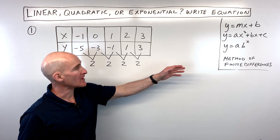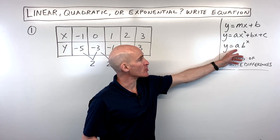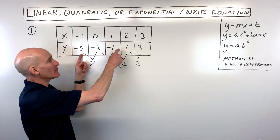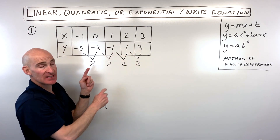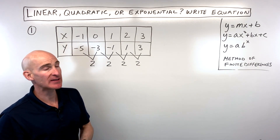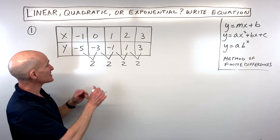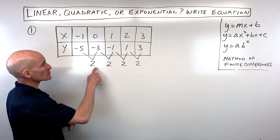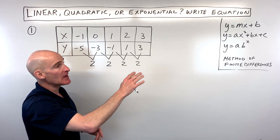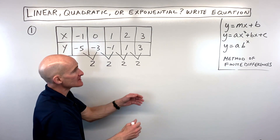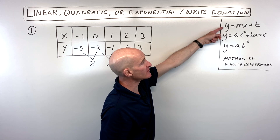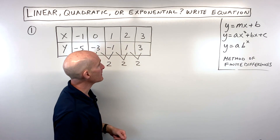What you're looking for with exponential is that you're actually multiplying by the same quantity to get to the next y value. But for this first example, since the first time we subtracted we got the same number each time, that tells us it's linear — and remember linear is the equation of a line, y equals mx plus b.